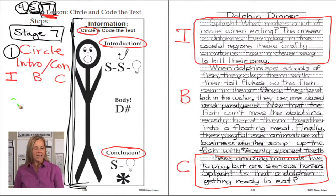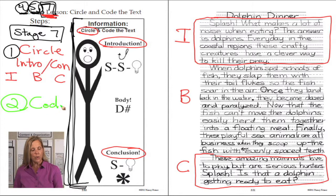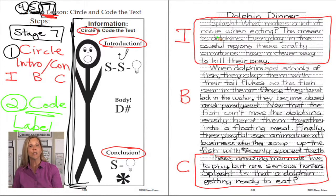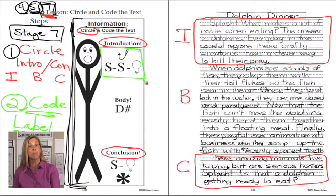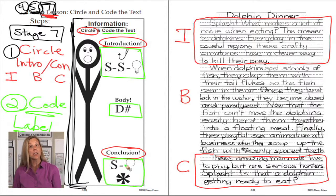Next, we'll take out a green pencil. Step two is with a green pencil or pen. At this point, we will code the text — we will label all the different elements necessary in the introduction, body, and conclusion. So let's go over and code the text with green on our bookmark, and box those elements in the introduction: the hook and the SS light bulb with green. We'll go to the body and box the D with a number sign to show that we're going to number the details. And finally, at the bottom of the conclusion, we will box S light bulb for the secret formula to repeat the big idea using different words, and the asterisk for the snappy ending.